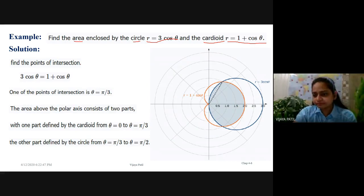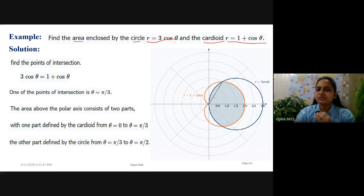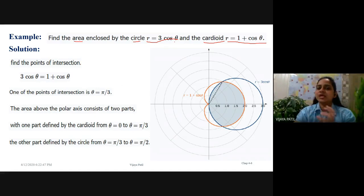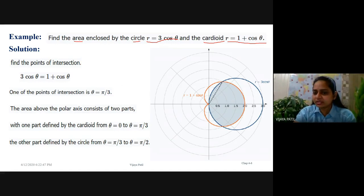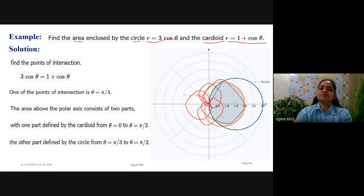Pause the video, find r equals 3 cos theta in terms of x and y, get the center and radius, and draw the circle to verify. For the cardioid r equals 1 minus cos theta, there are four types of cardioids — one of the cardioids looks like this, and the other cardioid types have different orientations. We have drawn this figure here.